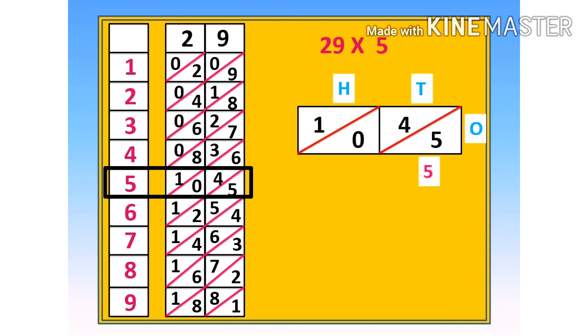5 represents 5 ones, 4 plus 0 is equal to 4 represents 4 tens, and 1 represents 100. Adding 5 ones, 4 tens, and 1 hundred gives 145. So 29 multiplied by 5 is equal to 145.